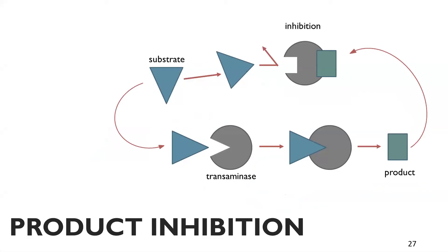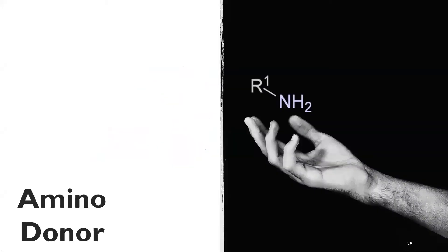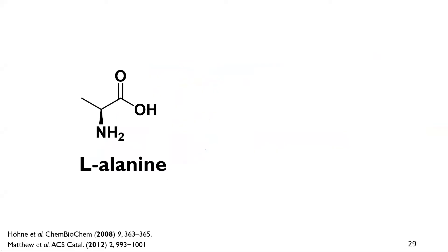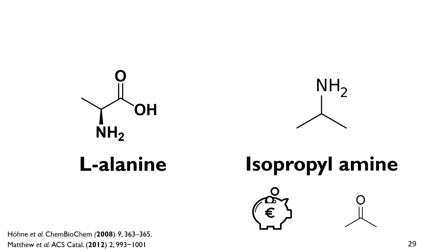There are different approaches to overcome this problem, most of them related to the amino donor. The most famous amino donor used is L-alanine; however, L-alanine only works with S-selective transaminases. For R-specific transaminases, we need to use D-alanine. Another very famous amino donor is isopropylamine. Isopropylamine is not chiral, so it has no stereocentre, and therefore it can be used in both S- or R-specific transaminase reactions. Moreover, isopropylamine is quite cost-effective and the byproduct ketone can be removed from the reaction by evaporation quite easily.